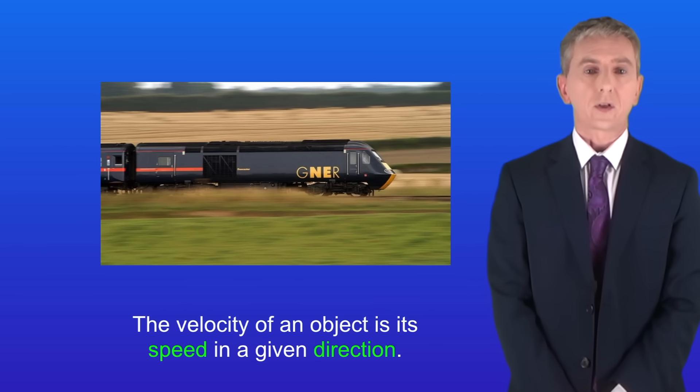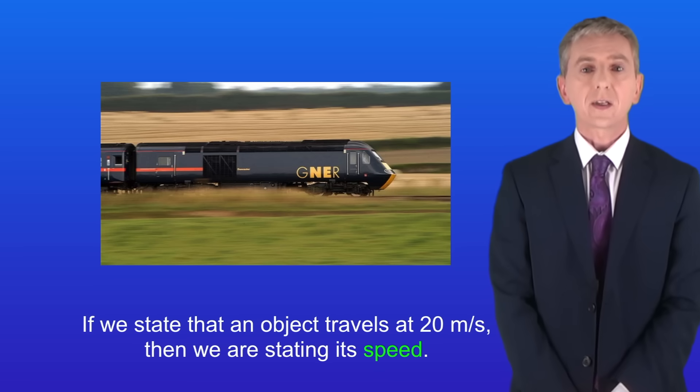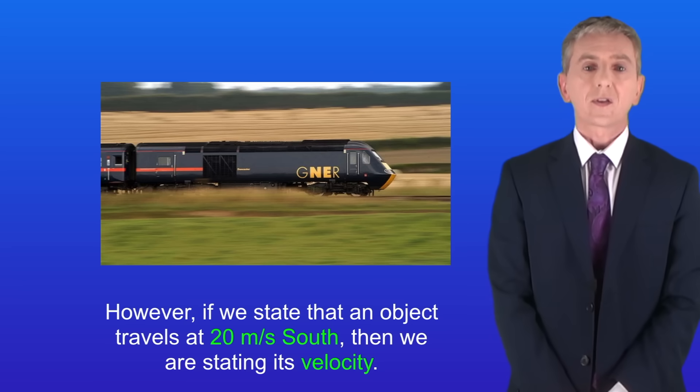Now in this video we're looking at velocity. The velocity of an object is its speed in a given direction. So if we state that an object travels at 20 metres per second then we're stating its speed. However if we state that an object travels at 20 metres per second south then we're stating its velocity.